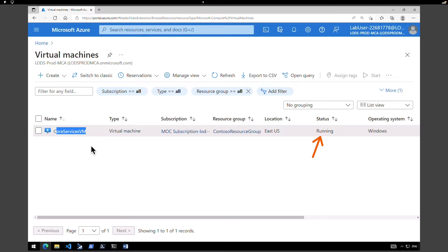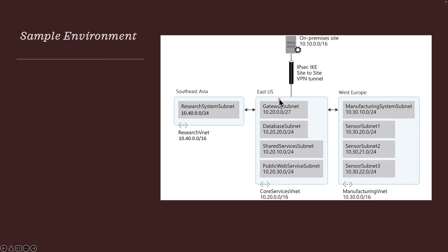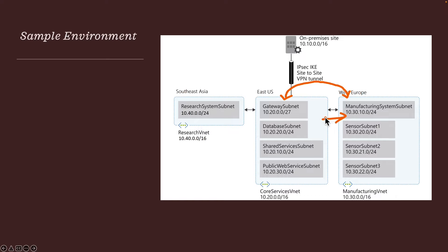These steps are not the main steps I want to show you in this lab — they are prerequisites before showing you how to create a virtual network gateway. Ideally, when we try to connect the virtual machine from one VNet to another, it should fail because there is no VNet peering or gateway transit in between. Then we're going to create a virtual network gateway and establish the connection so that the VM in the Core Services VNet can communicate to any VM in the Manufacturing VNet.